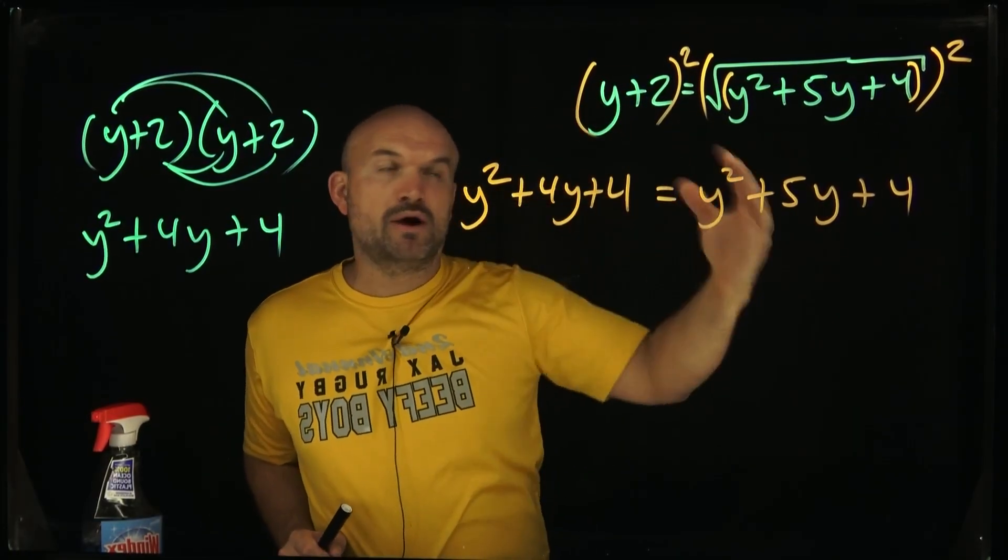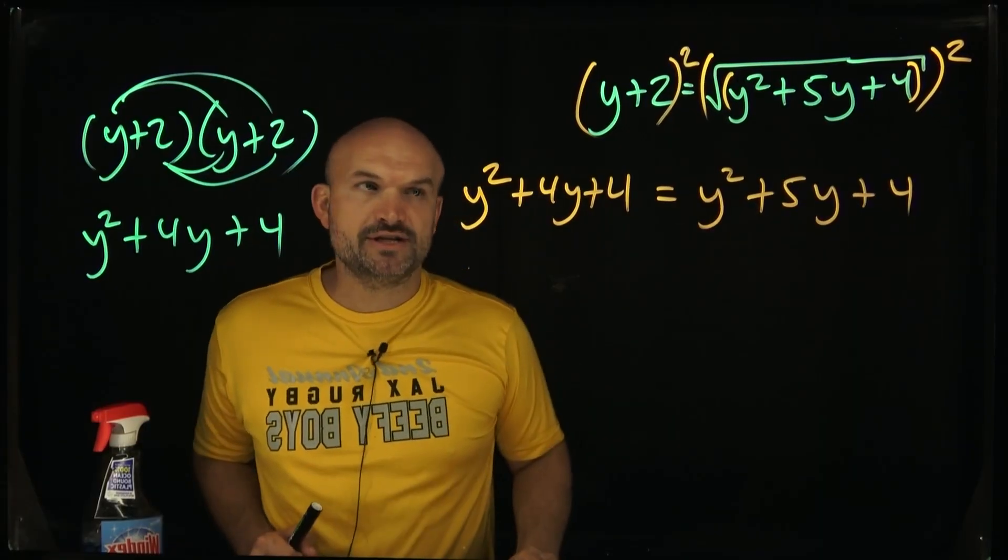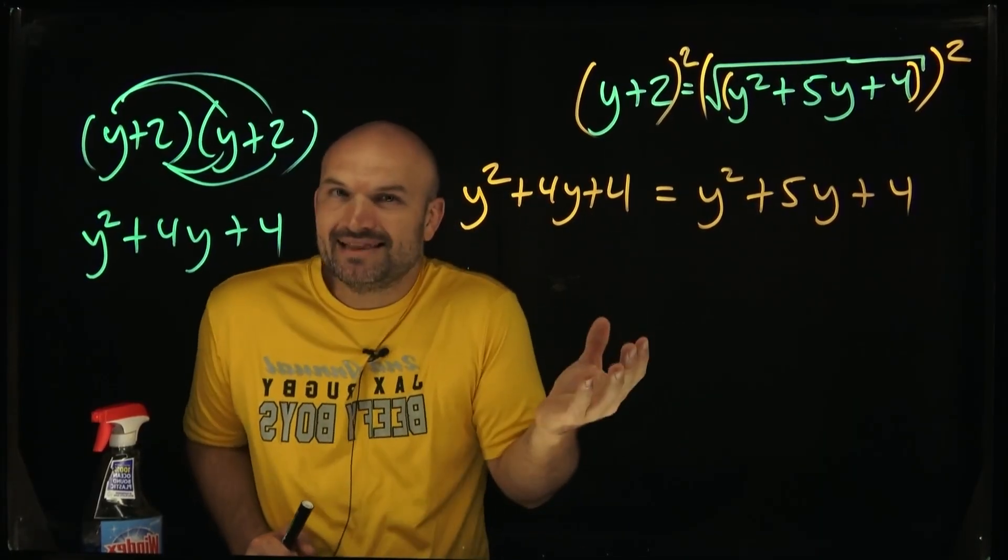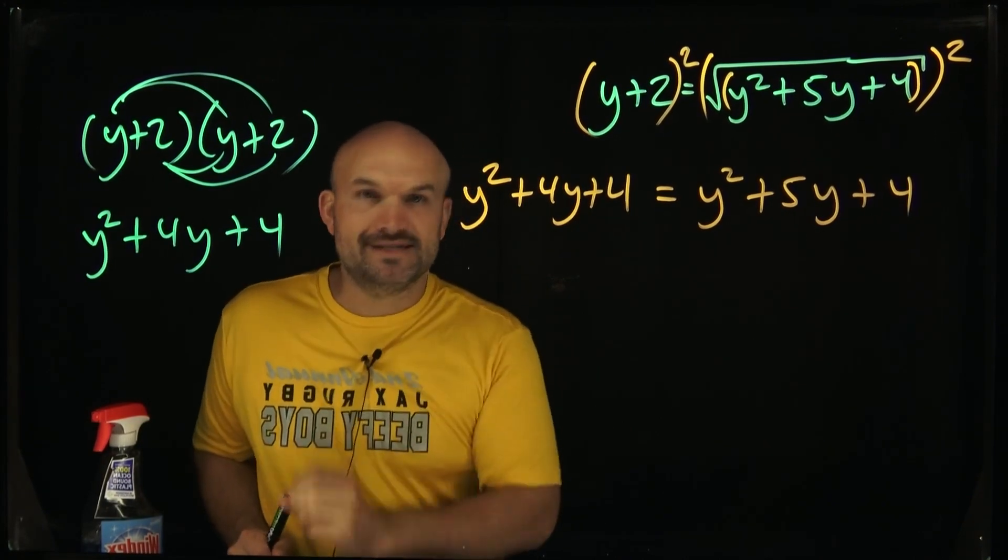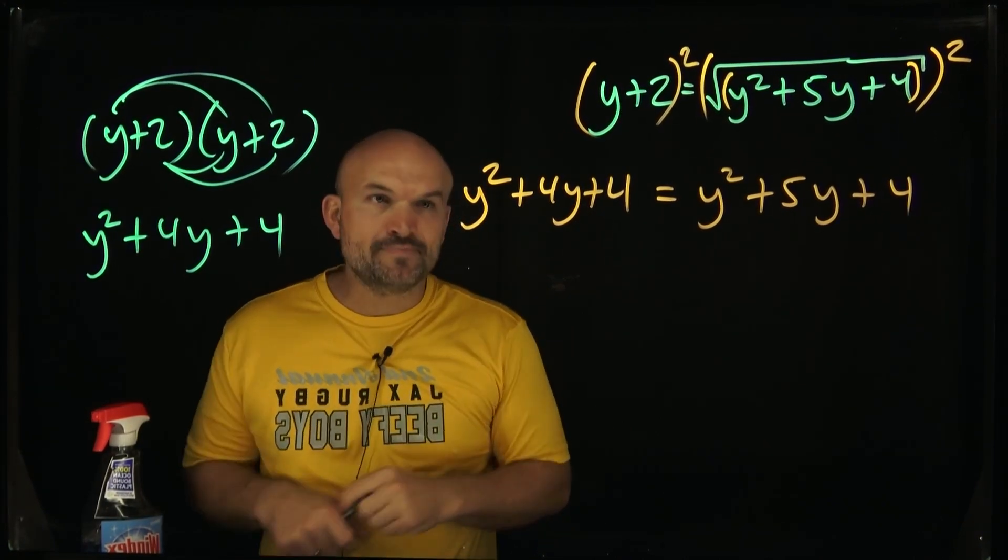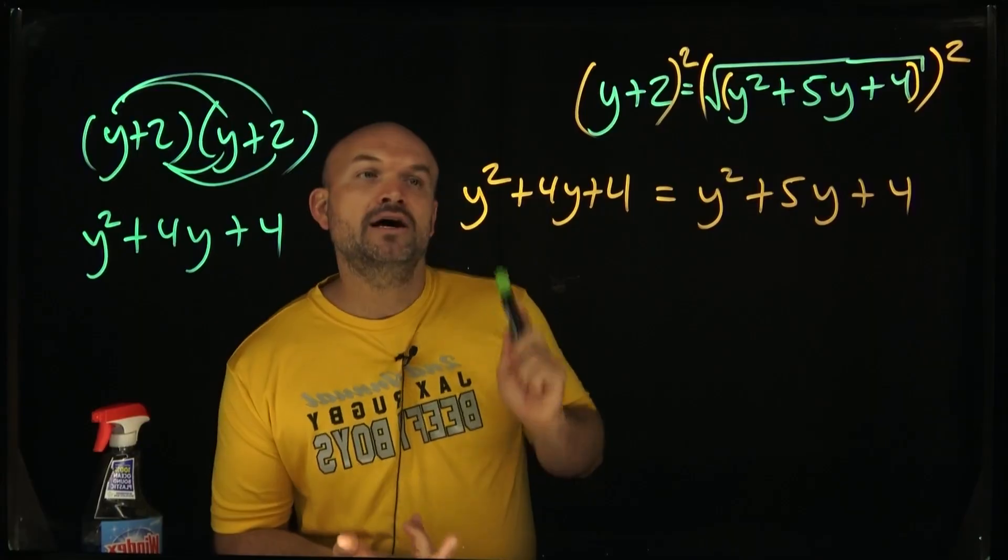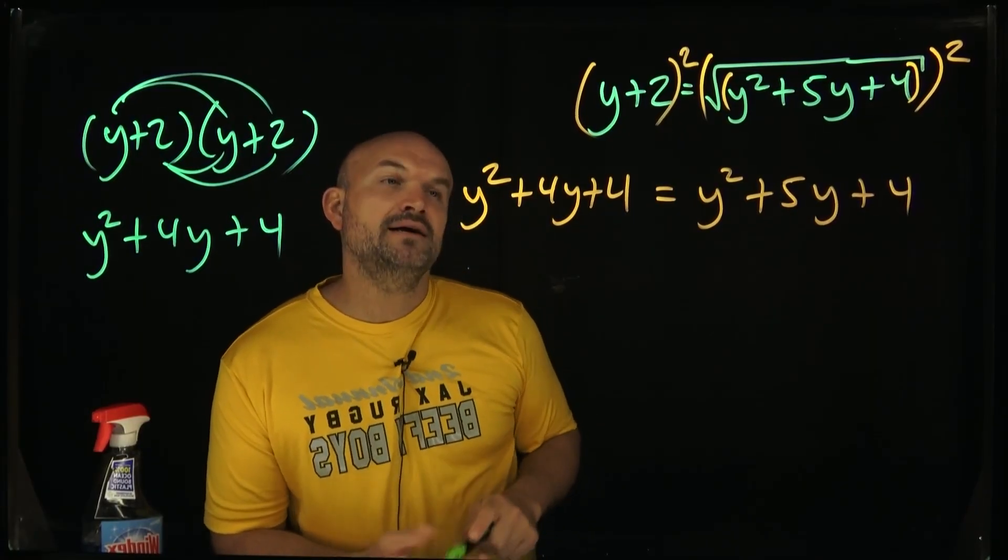When we're dealing with quadratic equations, what we want to do is the same kind of thing, we want to isolate it. We want to get it equal to zero because if we have equal to zero then we can solve either by factoring or we can solve by using the quadratic formula or completing the square, you know, whatever may be our solving technique.